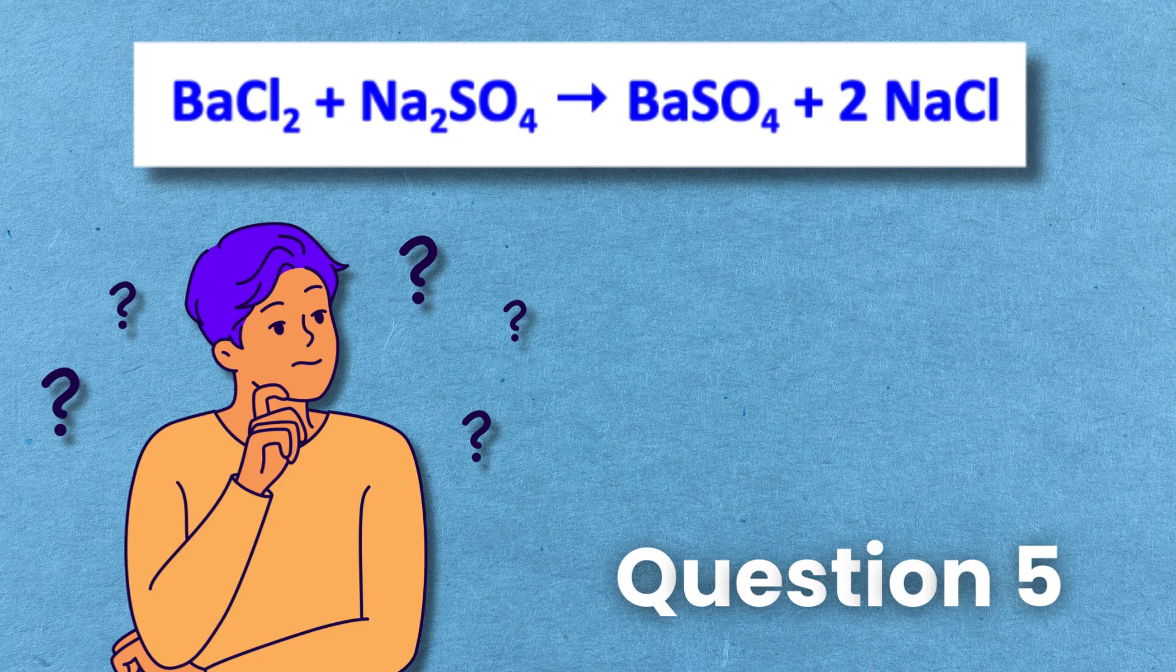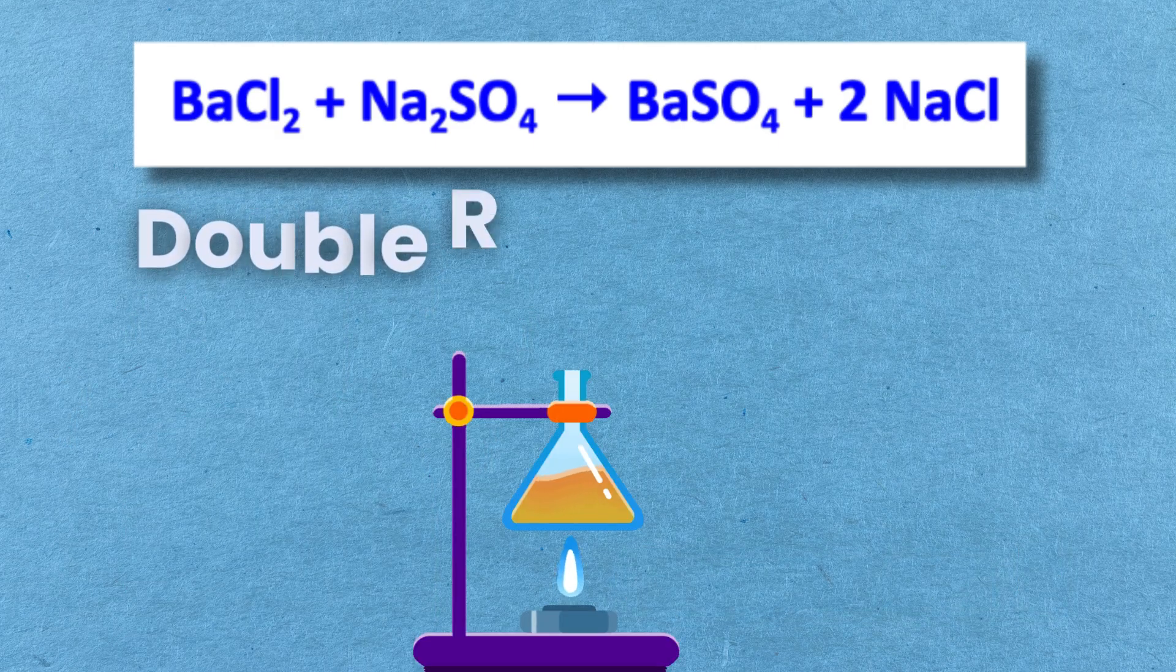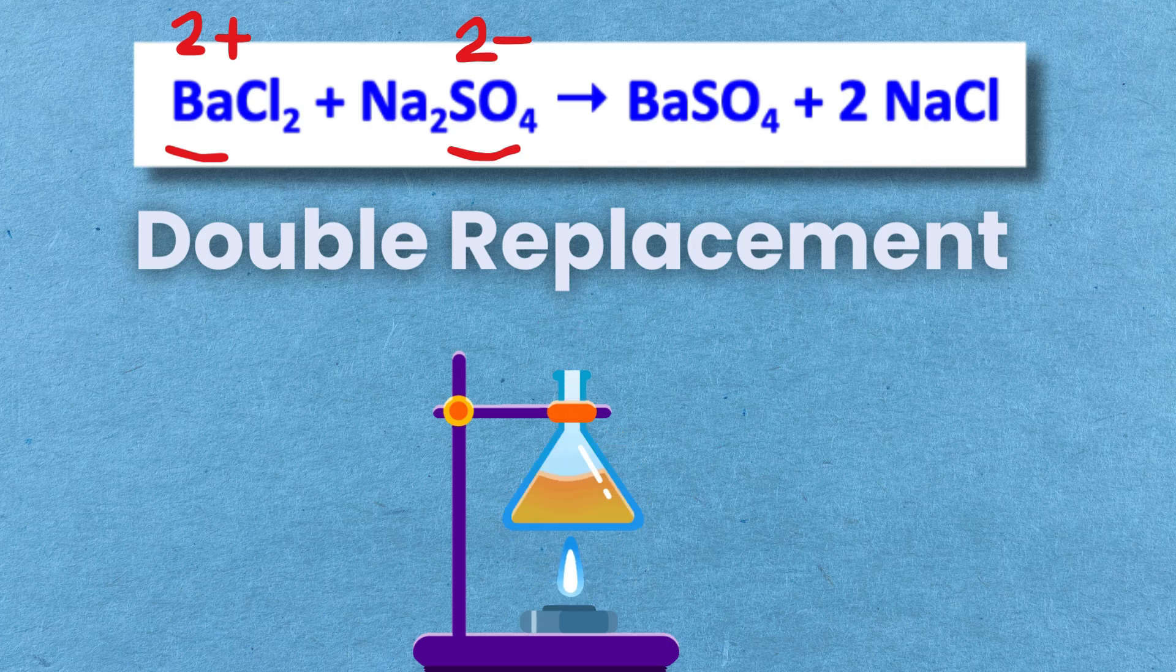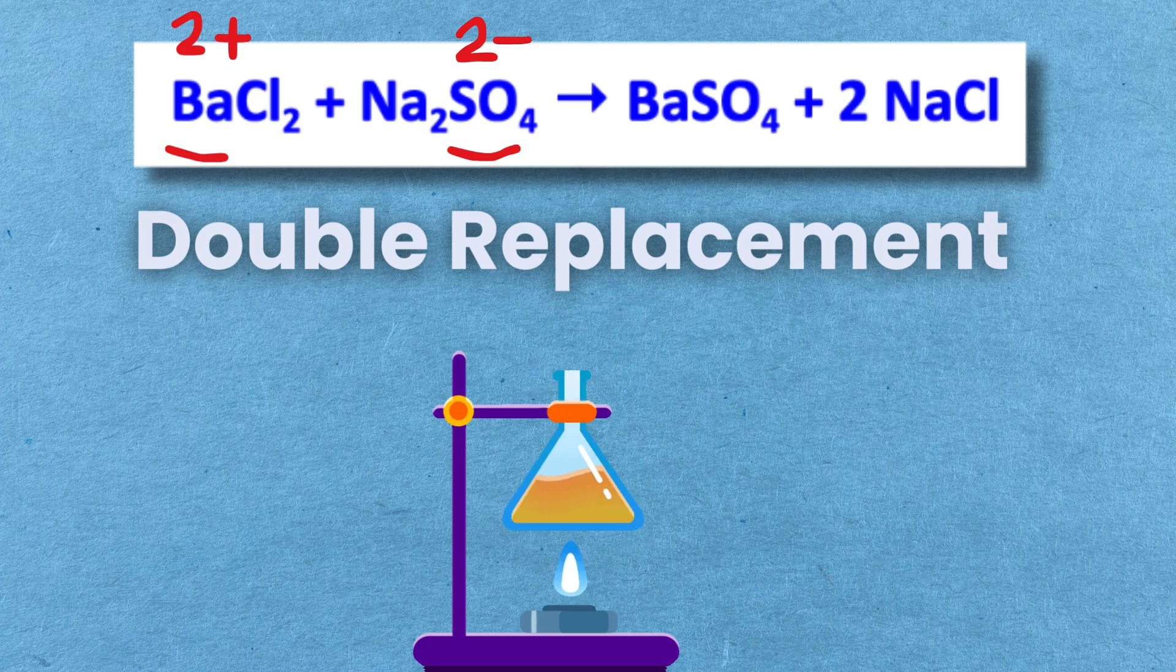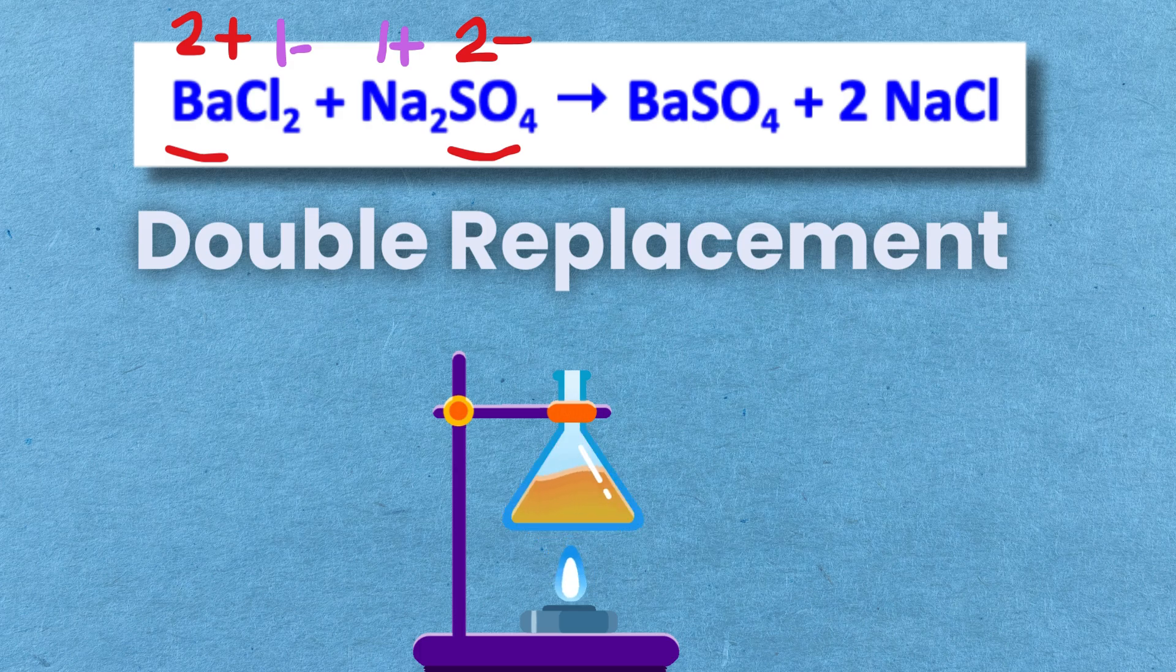Barium chloride plus sodium sulfate gives barium sulfate plus sodium chloride. This is a double replacement reaction. The barium 2 plus ion from the barium chloride combines with the SO4 2 minus ion from the sodium sulfate to form barium sulfate. While the Na1 plus ion from the sodium sulfate combines with the chloride ion from the barium chloride to form sodium chloride.